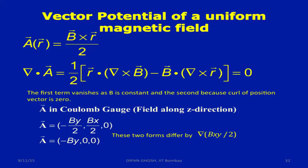For example, in this case it is written as B cross r by 2. You can take the del cross of that and show that this is actually the magnetic field. If you do a divergence of this quantity, it turns out to be zero. Divergence equal to zero is the Coulomb gauge.